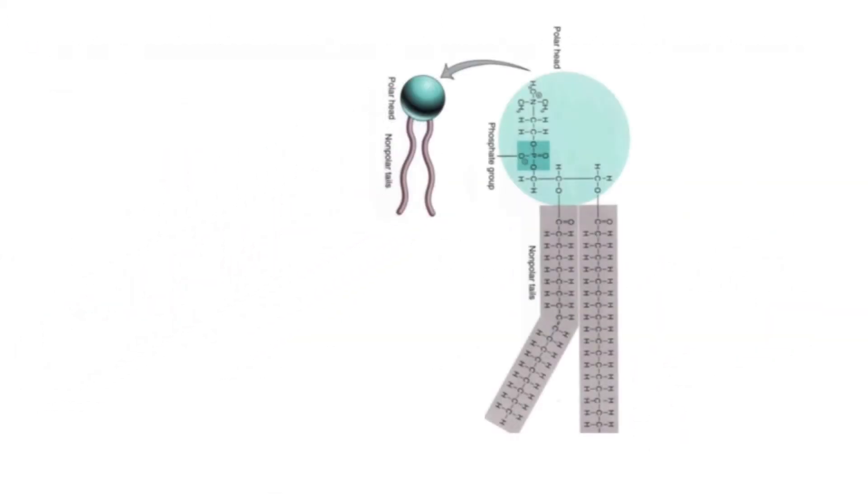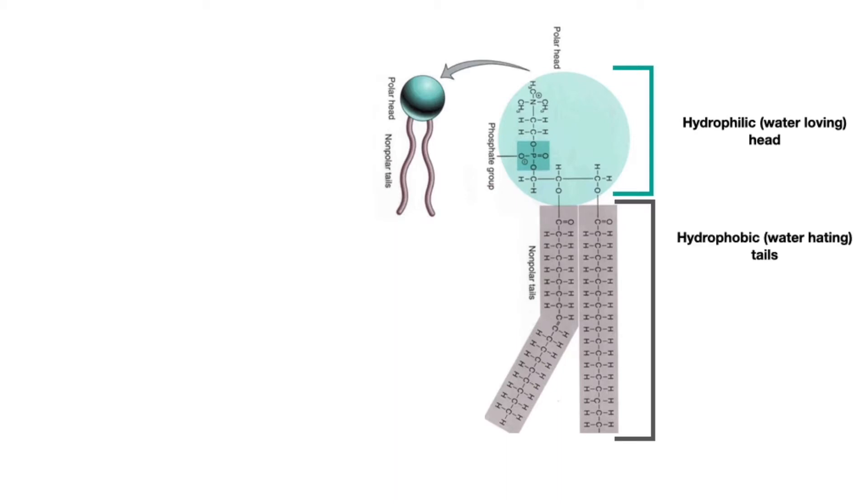Recall from our lesson on lipids that phospholipids have at one end a polar head that is hydrophilic or water loving, meaning it interacts well with water. At the other end they have two non-polar fatty acid tails that are hydrophobic or water hating and do not interact well with water. Because of these unique properties, when placed in a liquid environment, phospholipids tend to arrange themselves into a phospholipid bilayer.